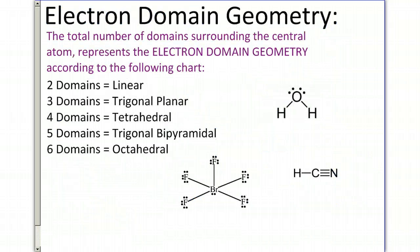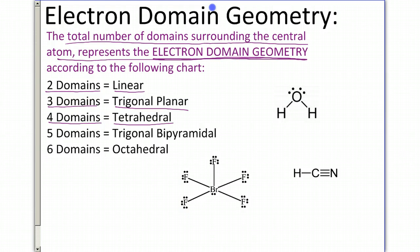Now that we know how to count domains, we can identify the electron domain geometry, which is the total number of domains that surround the center atom. It represents the electron domain geometry. In other words, there's a name for each set of domains. Two domains is called linear electron domain geometry. Three domains is called trigonal planar. Four domains is called tetrahedral. Five domains is called trigonal bipyramidal. Six domains is called octahedral. Now that I know what the names of the domains are, let's go ahead and apply those to our structures.